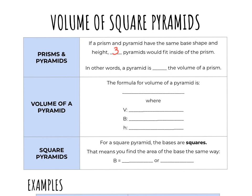Another way to look at that is saying that a pyramid is one-third the volume of a prism, and we use this information to get our formula for the volume of a pyramid.